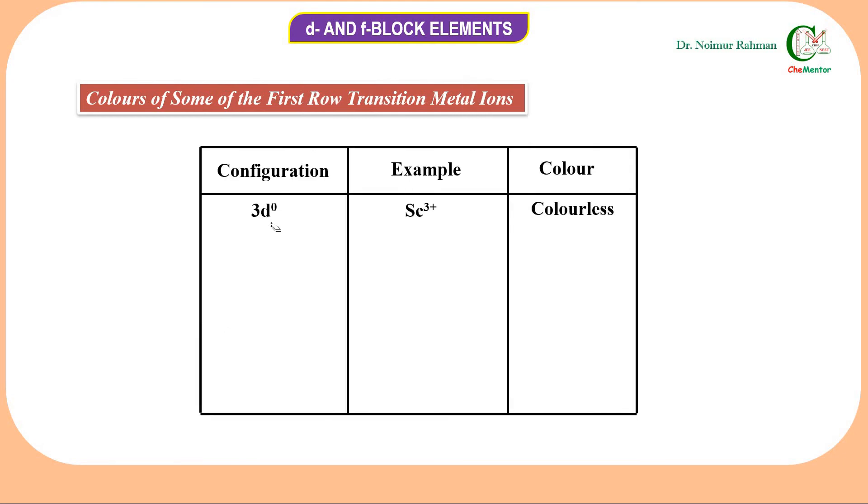This is the configuration d⁰ system. Sc³⁺ is a d⁰ system and there is no d-electron, so no d-d transition is possible. That is why they are appearing as colorless. Similarly, Ti⁴⁺ has no d-electron and its configuration is 3d⁰, so no d-d transition and no color.